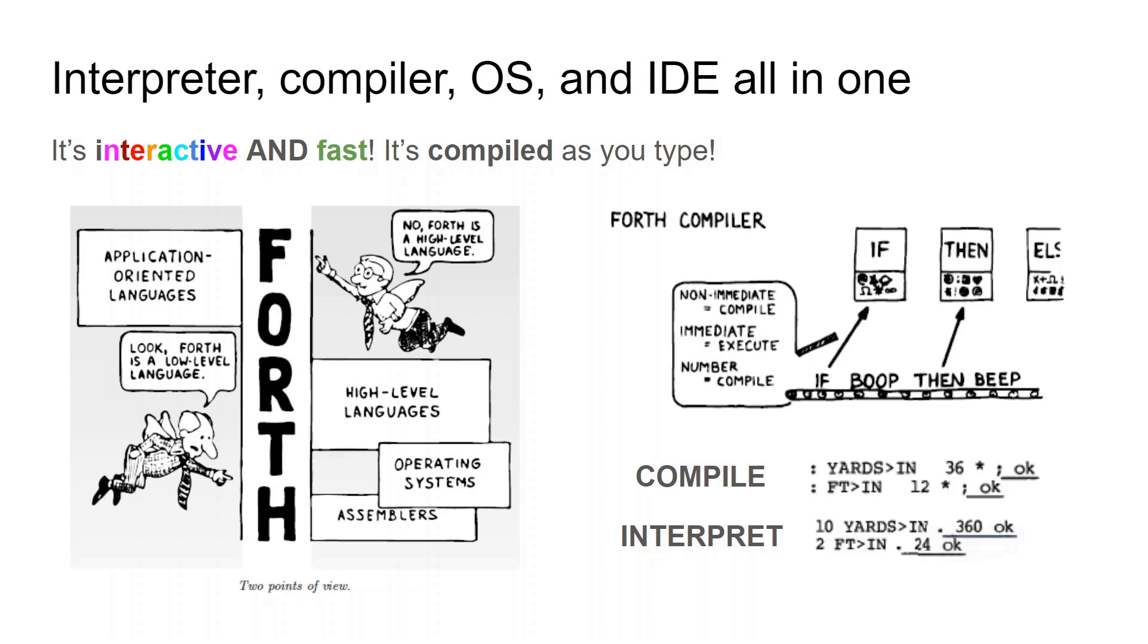Forth, though, is also an interpreted language. So when you don't have the colon definition, you put in your semicolon that ends the definition of the word and you just want to execute something. You can enter in a number that goes on the stack, 10 yards in this case, do that yards to inches operation that multiplies 36 by what was on the stack, and voila! You see there's 360 inches in 10 yards. So you can interpret these words, but they execute very quickly because they're compiled. It's not an interpreted language like BASIC. It's an interpreted and compiled language. Super cool.